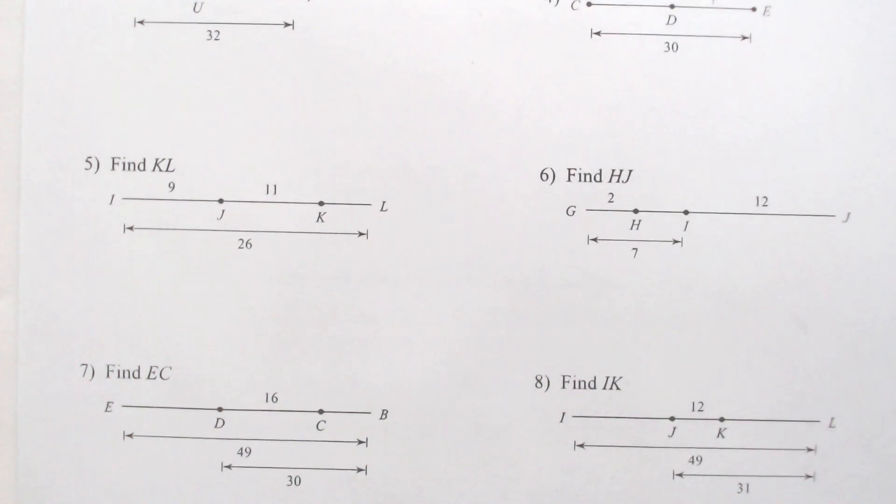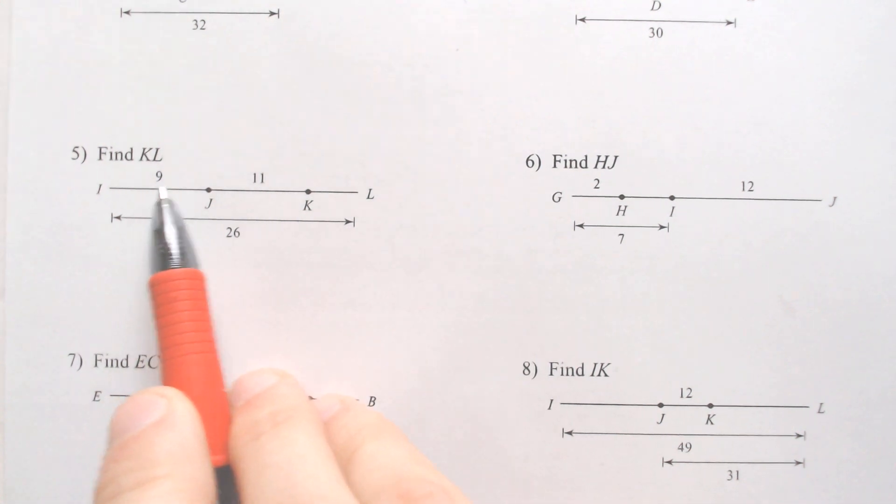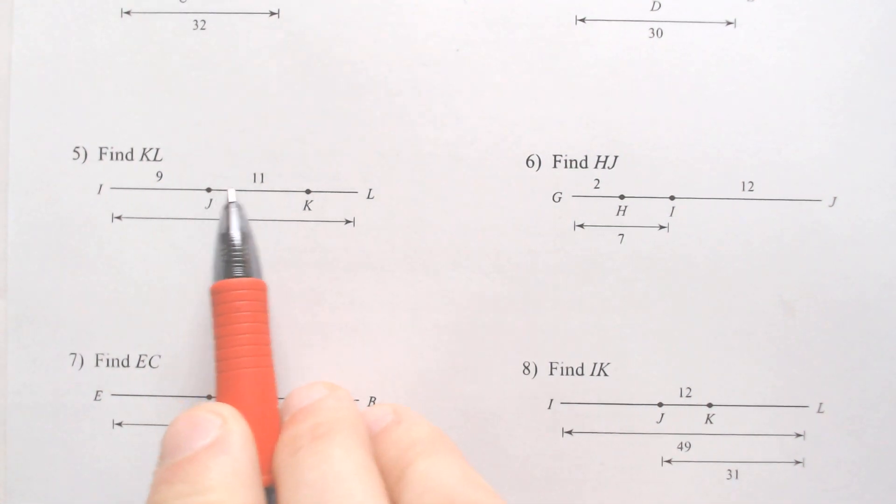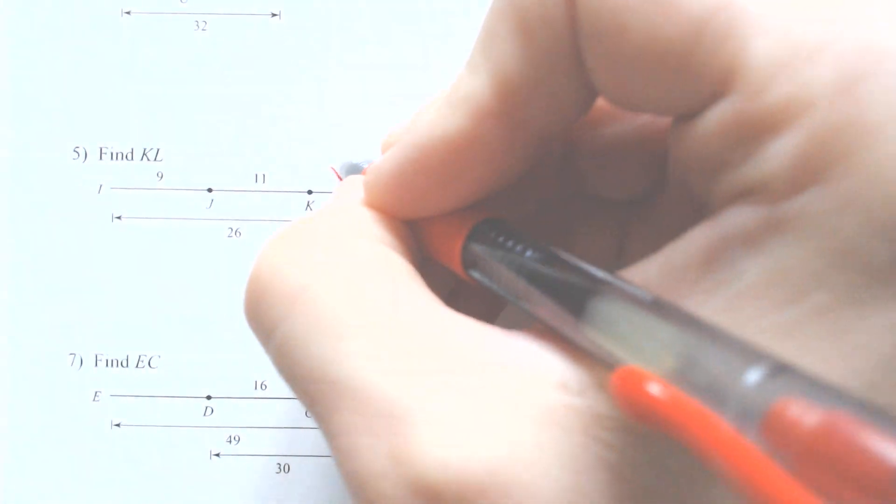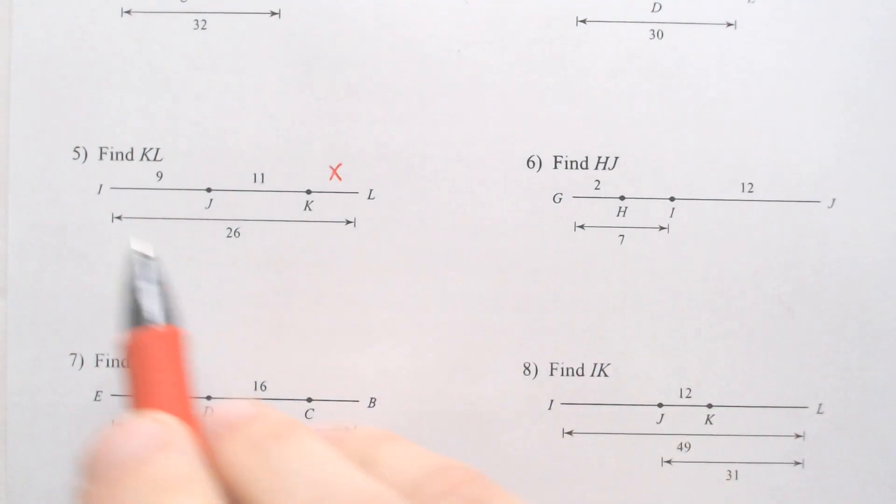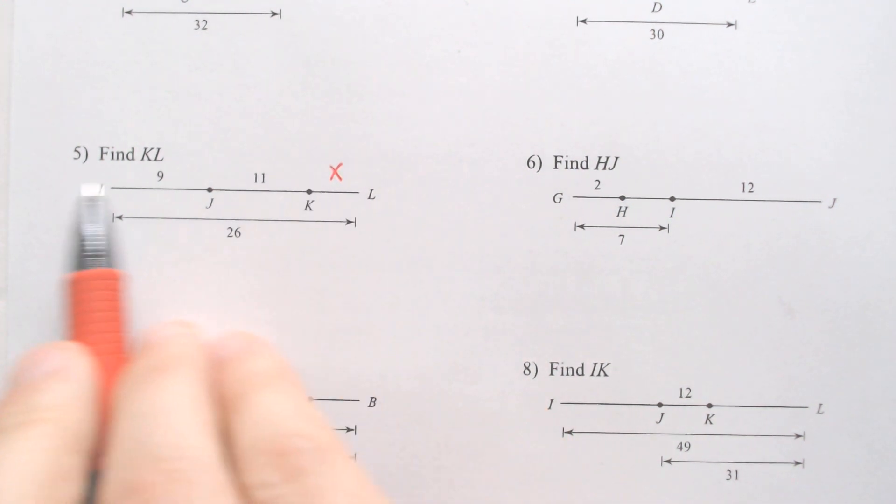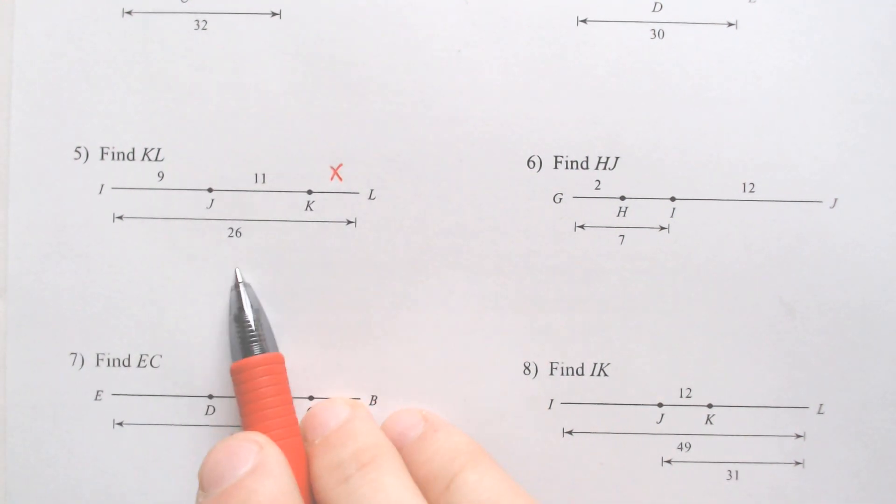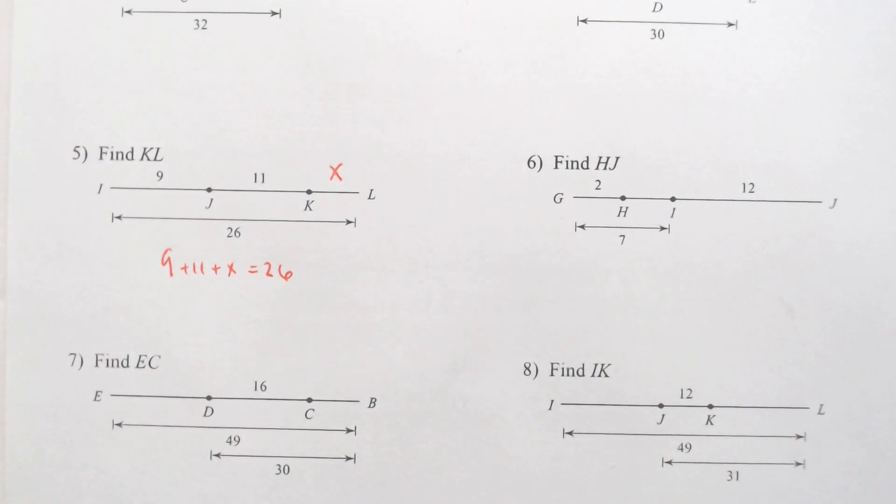Next one I'm going to try is K to L. For this one, it might be easier to set up the equation because you got 9 from here to here, and then 11 from J to K. We're looking for K to L, so I'm going to put an X right there. If we add this chunk with that chunk with this chunk, all three together will add to equal 26. So if we add 9 with 11 and X, that would equal 26.